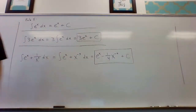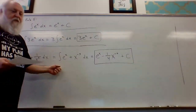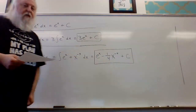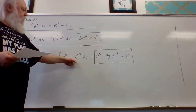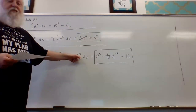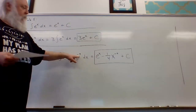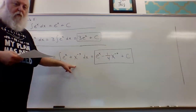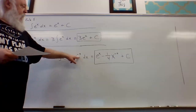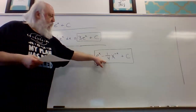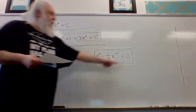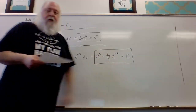Now we find the antiderivative term by term. The antiderivative of e to the x is e to the x. For x to the minus five, we add one to the exponent to get minus four, then divide by minus four, giving minus one-fourth times x to the minus four power. Then we add the arbitrary constant c.